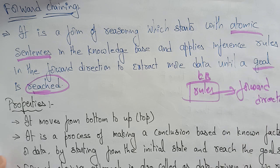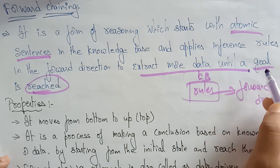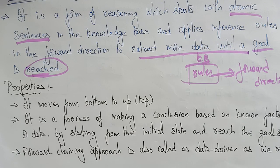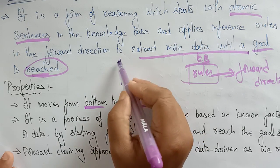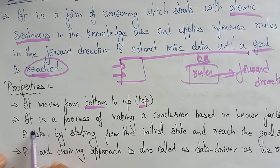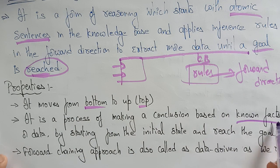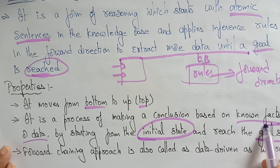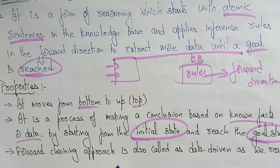We are applying the rules present in the knowledge base in the forward direction. The main aim is to extract more data until a goal is reached. A forward chaining moves from bottom to top — it takes the first rule, second rule, and so on moving from bottom to top. It is a process of making a conclusion based on known facts or data, by starting from the initial state and reaching the goal state.